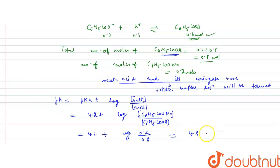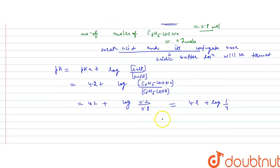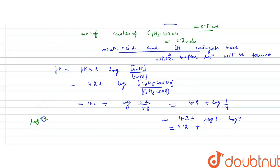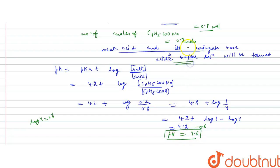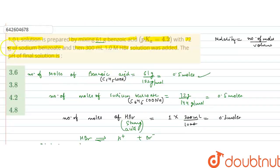This gives pH = 4.2 + log(1/4). Using the log property, log(1/4) = log 1 − log 4 = 0 − 0.6 = −0.6. So pH = 4.2 − 0.6 = 3.6. The final pH of the resulting solution is 3.6, which corresponds to option A. I hope you understood the solution. Thank you.